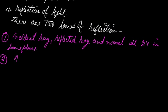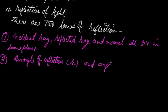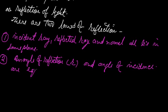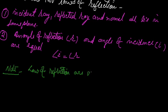The second law states that the angle of incidence and the angle of reflection are equal — angle I is equal to angle R. These laws of reflection are valid for all types of reflective surfaces.